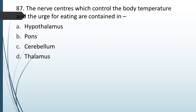Question No. 87: The nerve centers which control the body temperature and the urge for eating are contained in which structure? The correct answer is Option A, the hypothalamus.